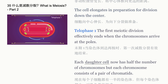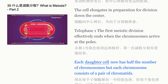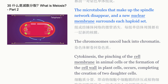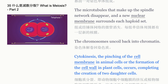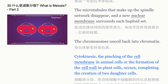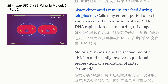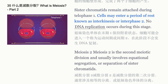In telophase I, the first meiotic division effectively ends when the chromosomes arrive at the poles. Each daughter cell now has half the number of chromosomes, but each chromosome consists of a pair of chromatids. The microtubules that make up the spindle network disappear, and a new nuclear membrane surrounds each haploid set. The chromosomes uncoil back into chromatin. Cytokinesis — the pinching of the cell membrane in animal cells, or the formation of a cell wall in plant cells — occurs, completing the creation of two daughter cells. Sister chromatids remain attached during telophase I.